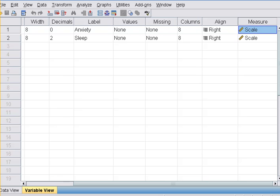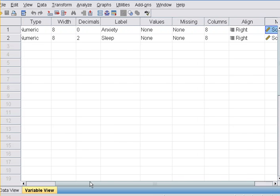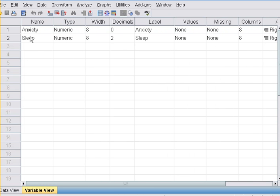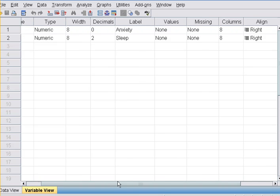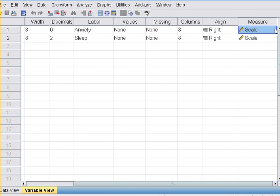Let's take a look at our example here. We're going to be considering anxiety and sleep, and looking at the relationship between them. Notice that in SPSS, the measure for anxiety and sleep is scale.